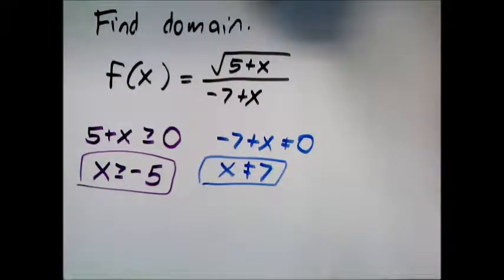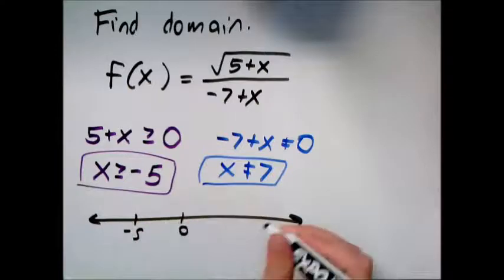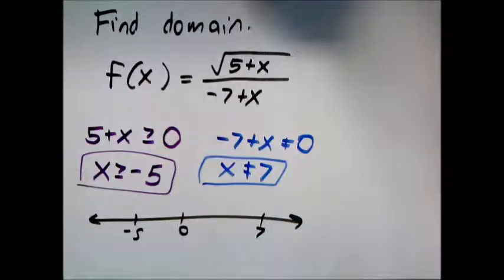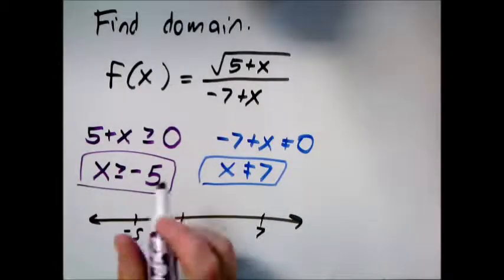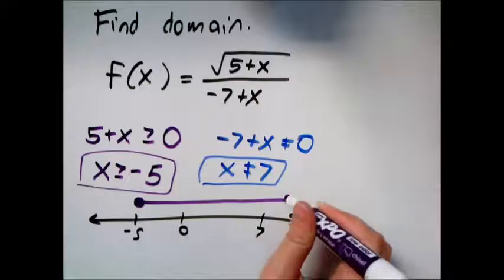So let's draw this on a number line so we can get an idea of what it looks like. So here's negative 5, here's 0, here's 7. So for this one I can only use numbers that are greater than or equal to negative 5. So closed in circle, I could use negative 5 and then only things that are bigger.